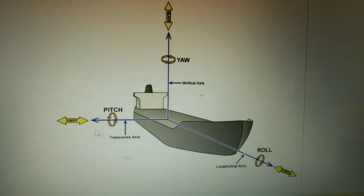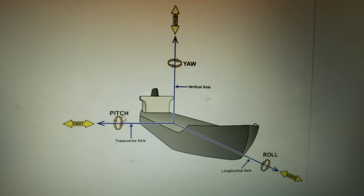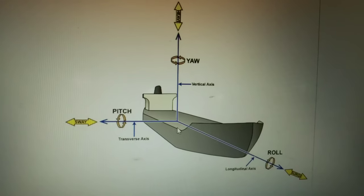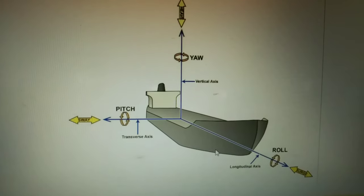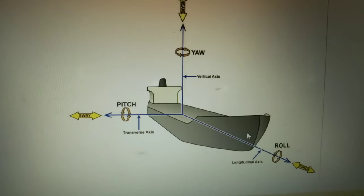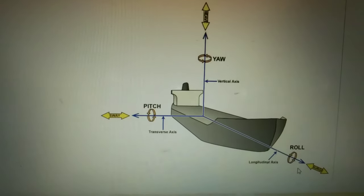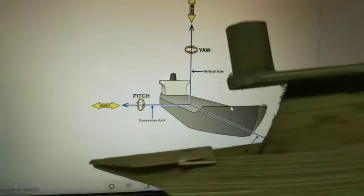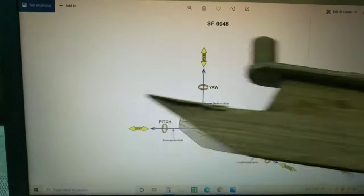First, what is pitching? You can easily see the transverse axis. See this pitching arrow — if the ship is making an angle with the transverse axis, then it is pitching. Then what is rolling? See, this is the longitudinal axis, and if your ship makes an angle with the longitudinal axis, this is called rolling. You can see — this is rolling, and this is pitching.